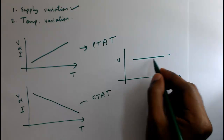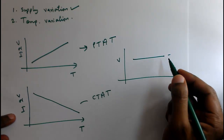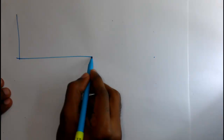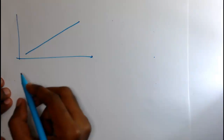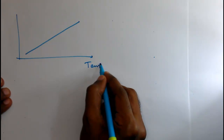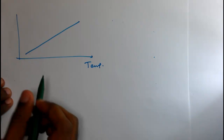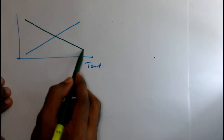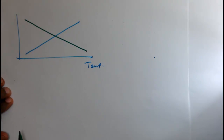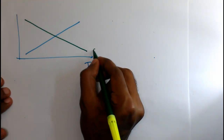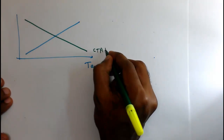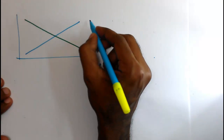So how will we generate this constant voltage? We can make a constant voltage by cancelling the effect of PTAT and CTAT. Suppose I have a PTAT voltage which is increasing with respect to temperature, and I have a CTAT voltage which is decreasing with respect to temperature.